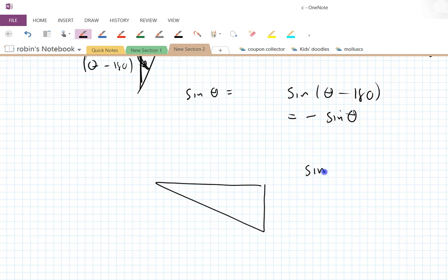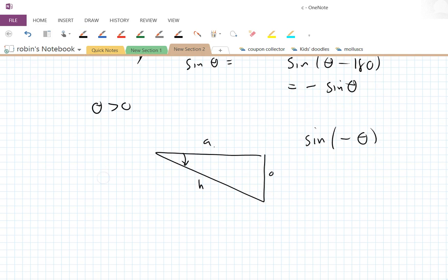Let's have a look at this. If I want to work out sine of a negative angle, and here, if theta's positive, then minus theta, of course, is coming down here. That's opposite, that's hypotenuse, that's adjacent.